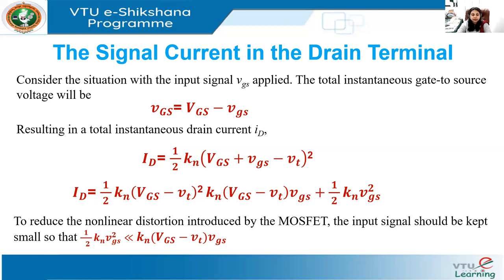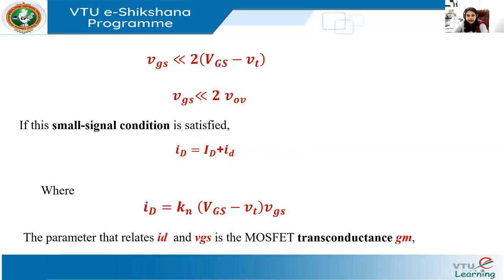If the small signal condition is satisfied, that is vgs much less than 2·VOV, and we neglect the last term, we can express ID as ID = ID + id, where id = KN·(VGS − VT)·vgs, which is the signal component of the drain current directly proportional to the input signal vgs.